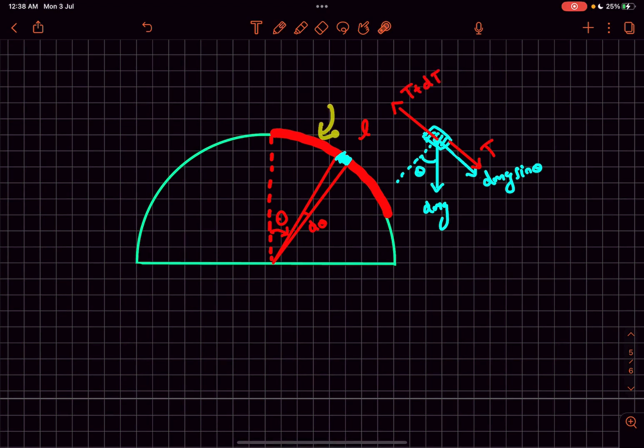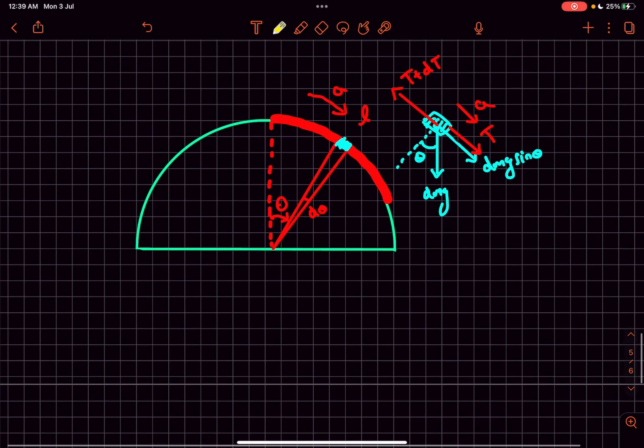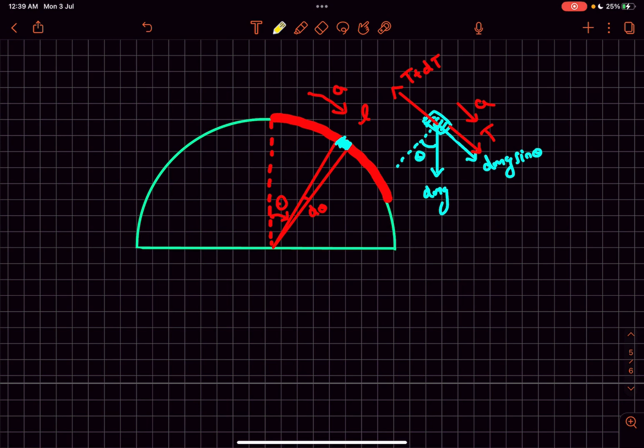After this rope is released, there will be some acceleration of the rope along the semicircular track. Let's say that particular acceleration is a. This dm·g element will also have that acceleration a down the incline. Now let's equate the forces along the tangential direction.